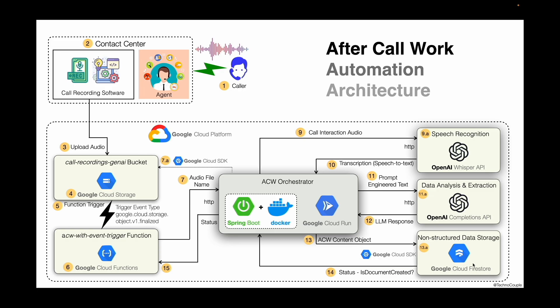It also handles saving after call work data to GCP Firestore — a NoSQL document database used to store the ACW data extracted from the call recording. Now let's understand this sequence of events. You can follow the numbers on the screen for clarity. Once the call is completed, the recording is saved in the cloud storage bucket. This triggers our cloud function. The cloud function gets the name of the recently added file, for example interaction1.wav, from the cloud storage object. After this, the cloud function initiates a REST call to the ACW Orchestrator hosted on Cloud Run, providing the file name.